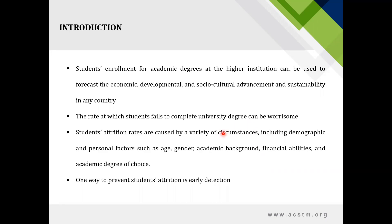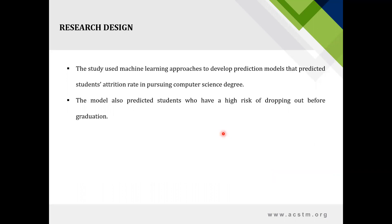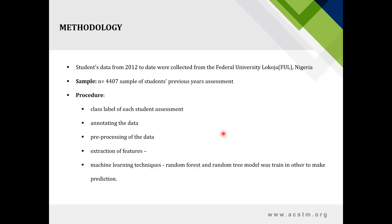One way to prevent student attrition is early detection. The study used machine learning approaches to develop prediction models that predicted student attrition rate in pursuing a computer science degree. The model also predicted which students would have a high risk of dropping out before graduation.